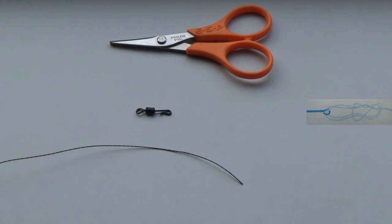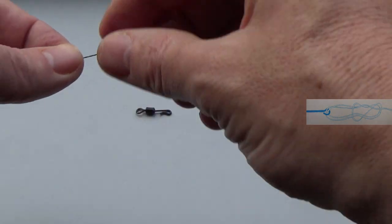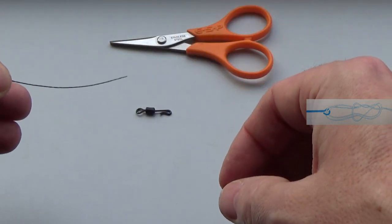Today we're looking at the Palomar knot. I use this knot for tying to hooks and swivels. It's exceptionally strong and definitely a knot you should be using because it won't let you down.